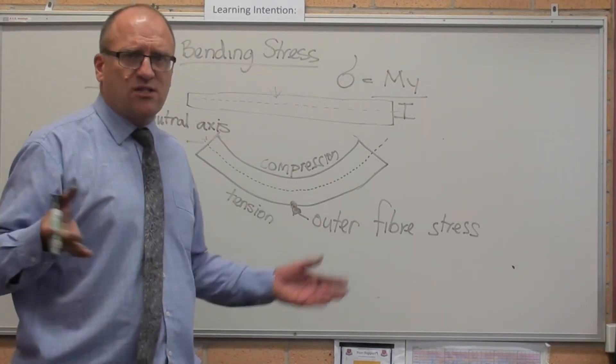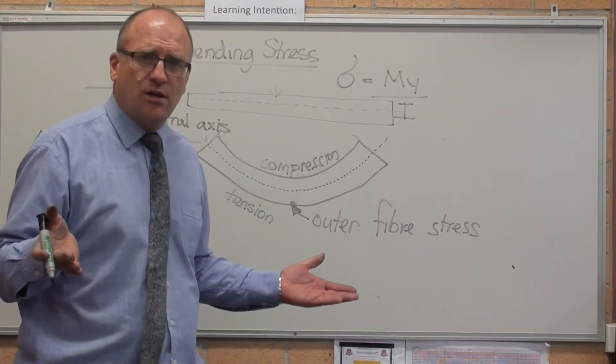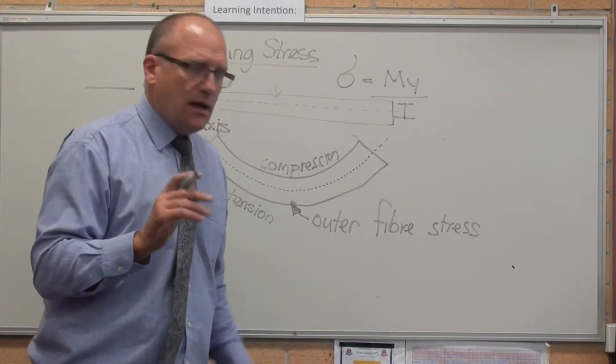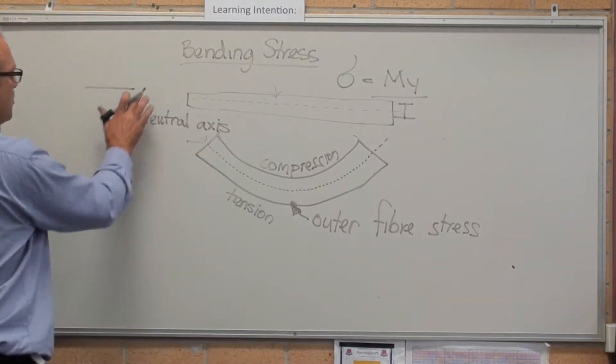That dotted line is what we call the neutral axis, because it's not in tension, it's not in compression when the beam bends, it's still the same.